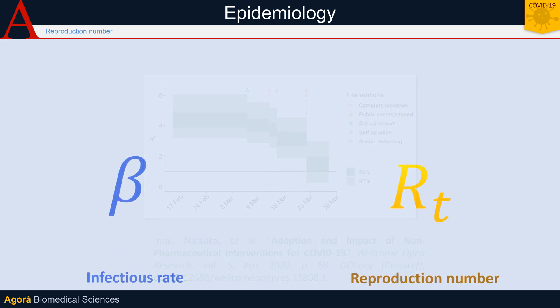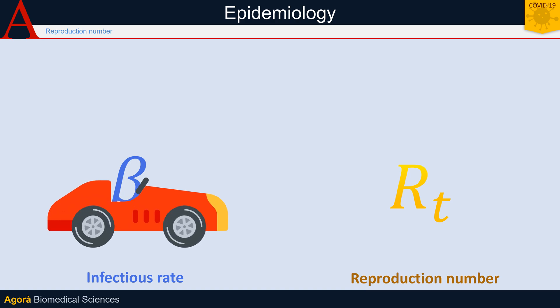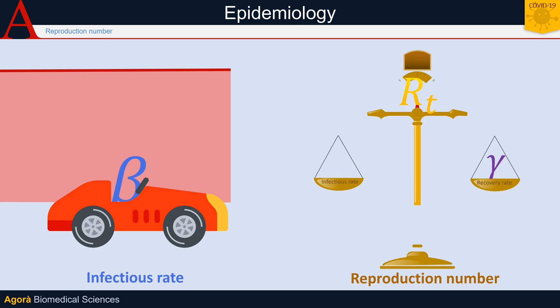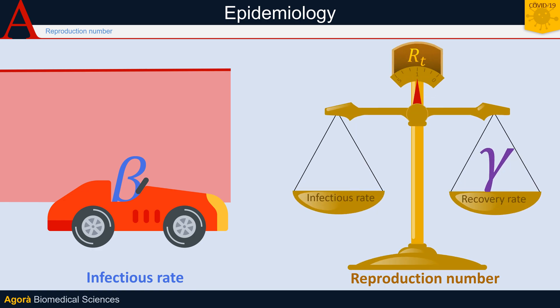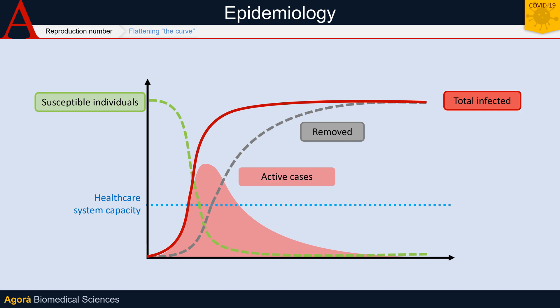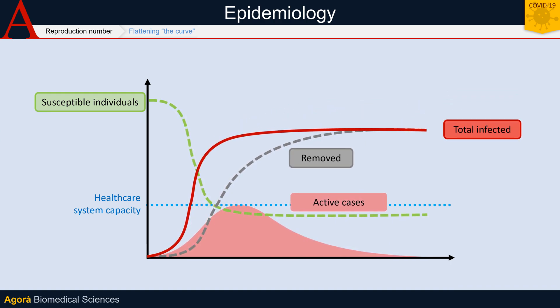At this point, some confusion may arise between the reproduction number and the infectious rate. The infectious rate is an index of the speed at which individuals are infected, and describes the speed at which the total number of infected people increases. The reproduction number, instead, describes the balance or imbalance between the speed with which individuals become infected and the speed with which they resolve their infection. R_t provides information on the evolution of active infections — the number of people who are infected every day and who may require treatment at the same time.